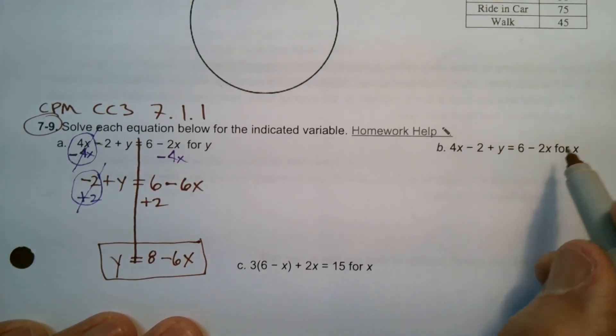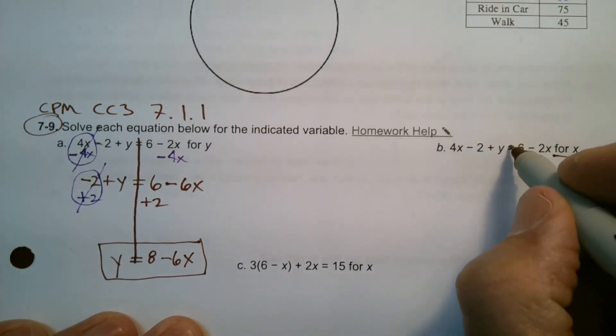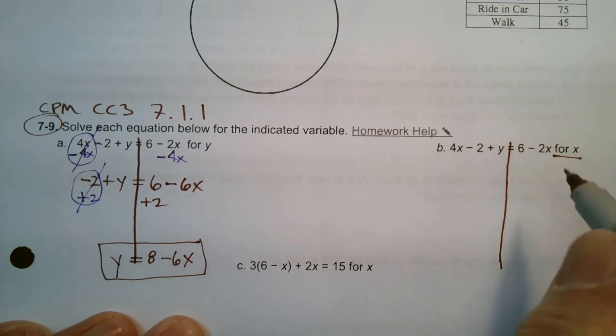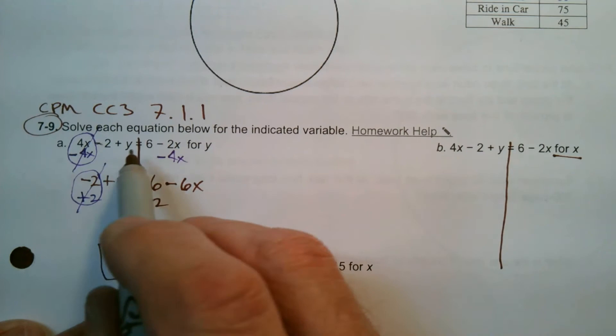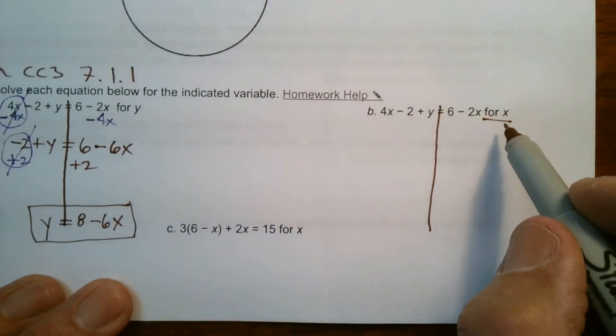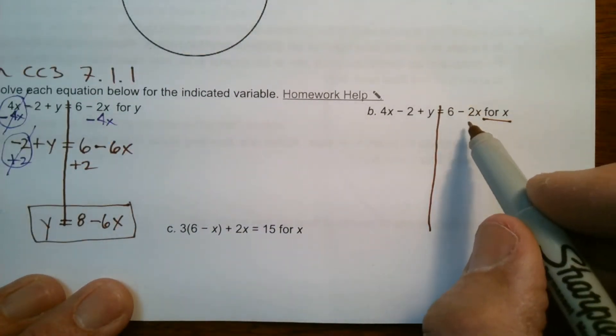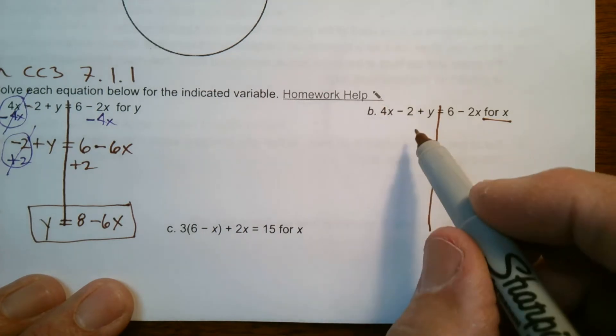B, this one says solve for x. So once again, I'm going to look at my equation. What do I have? I have a 4x minus 2y plus y equals 6 minus 2x. Oh, it's the same equation, but now I just got to get my x's alone. So in this case, I have x's on both sides of the equation.